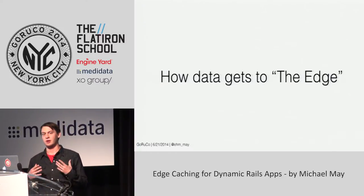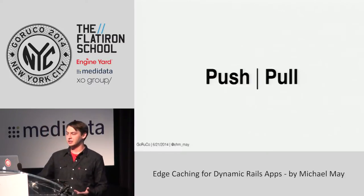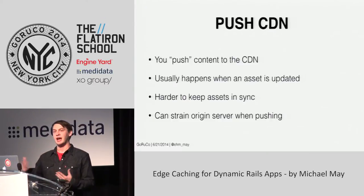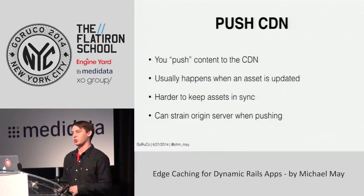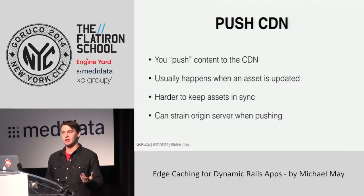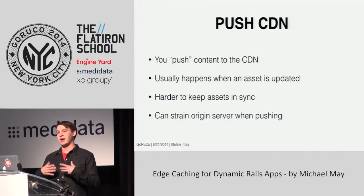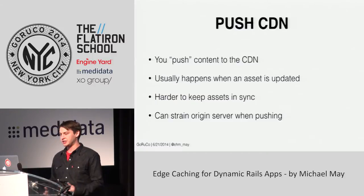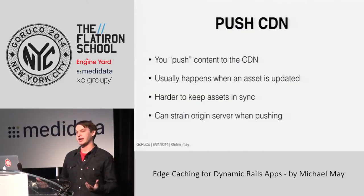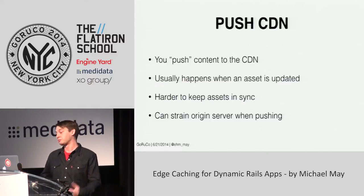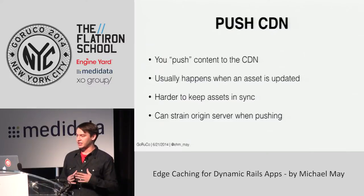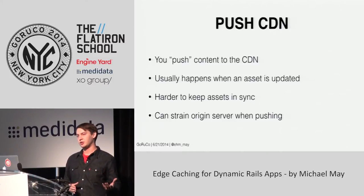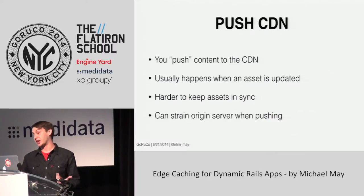There are two types of CDNs: push CDNs and pull CDNs. With push CDNs, you manually sync your content out to the edges — this usually happens when assets change. If you add new images or update a piece of JavaScript, you have to manually sync those to the edge nodes. One downside is it can be harder to keep your assets in sync, because we're human and we can forget to do stuff.